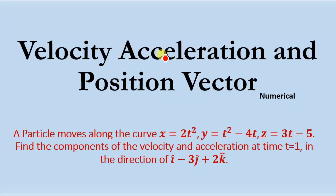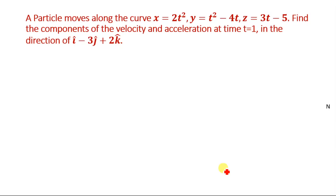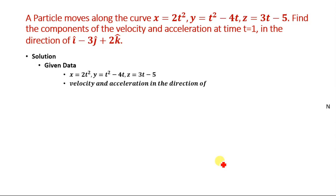Today's video is about velocity, acceleration, and position vectors. We will solve a numerical problem: a particle moves along the curve x = 2t², y = t² - 4t, and z = 3t - 5. Find the components of velocity and acceleration at time t = 1 in the direction of i - 3j + 2k.